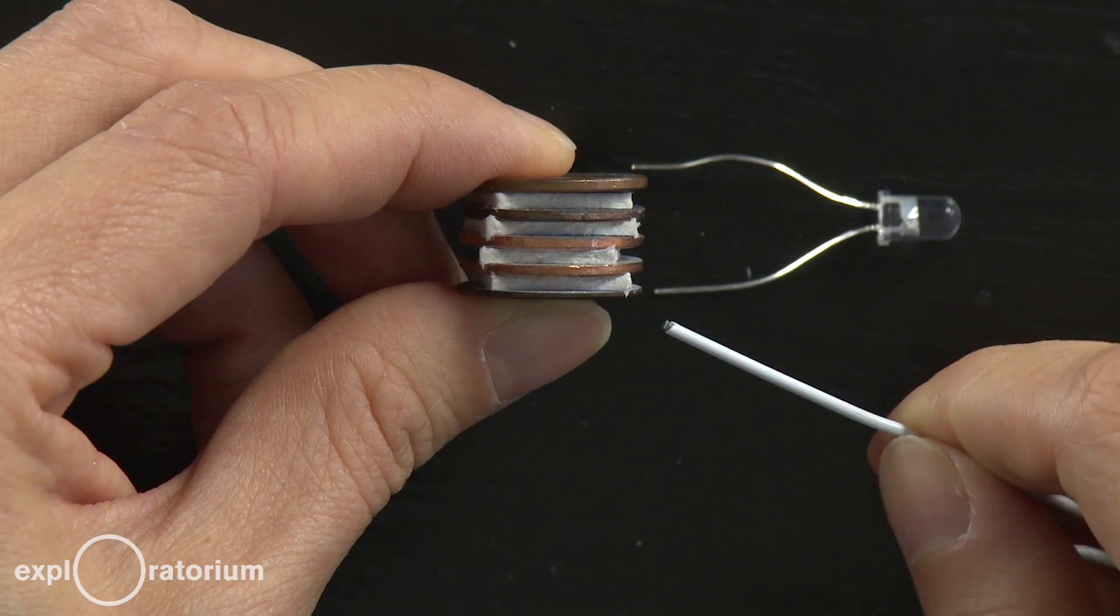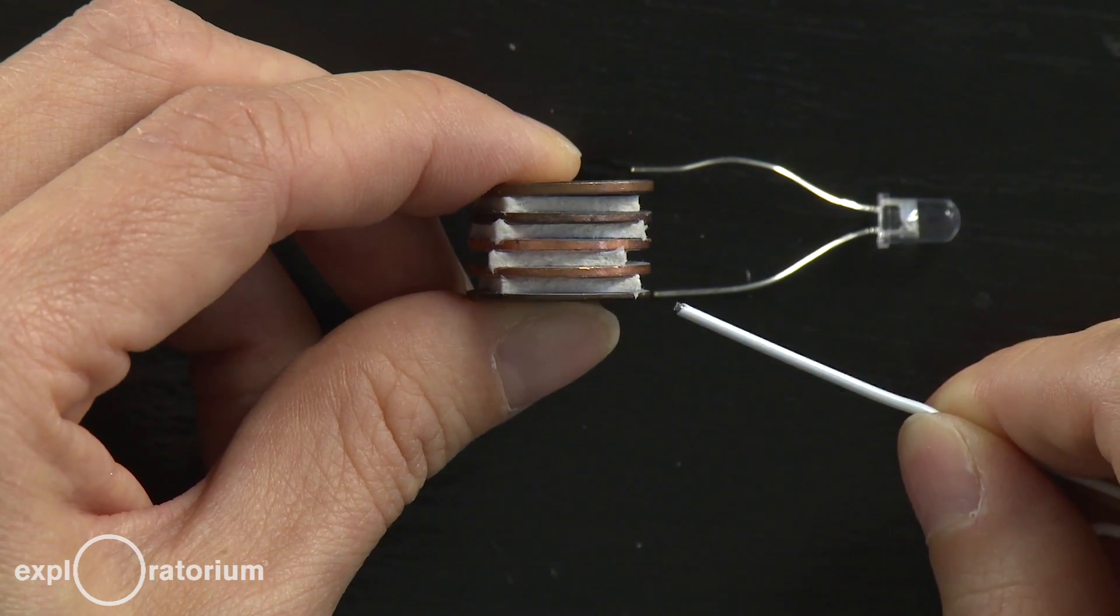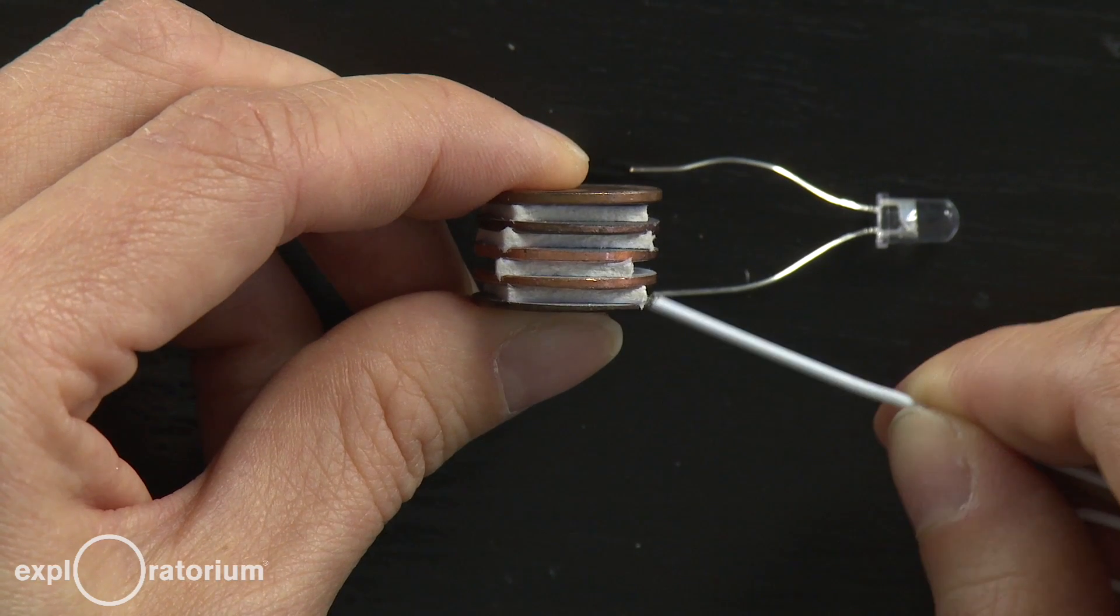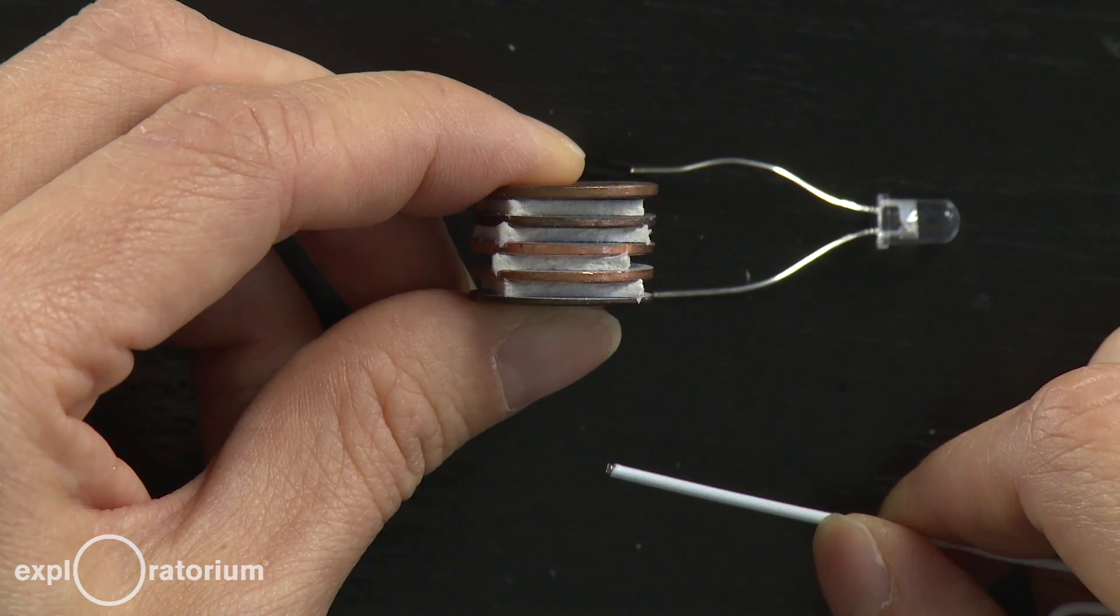The voltage or electric potential that each cell produces is determined by the chemistry of this battery. And a zinc-copper cell produces a little over half a volt.